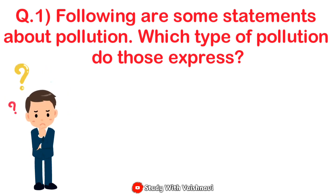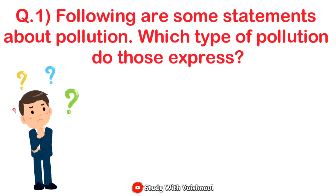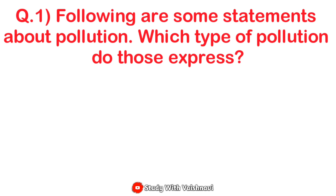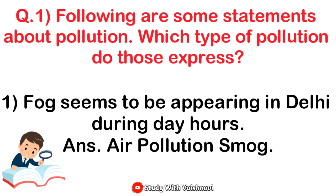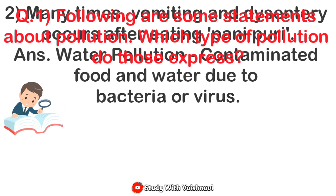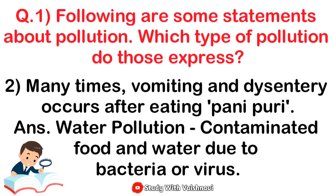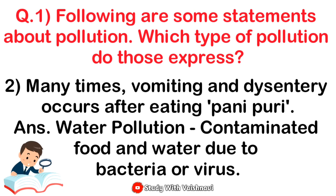Question number one: the following are some statements about pollution — which type of pollution do they express? First: fog seems to be appearing in Delhi during daytime. Answer: air pollution due to smoke. Next: many times vomiting and digestive problems occur after eating pani puri. Answer: water pollution — contaminated food and water due to bacteria or virus.